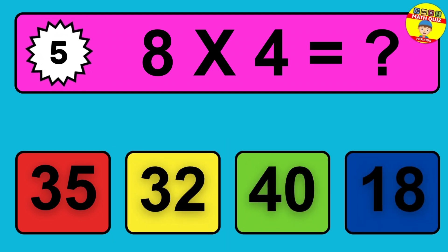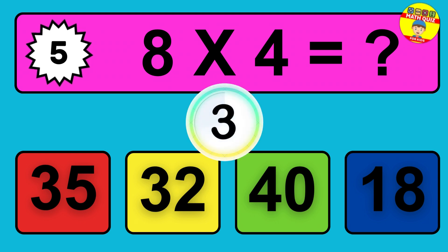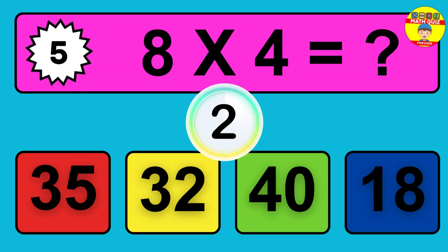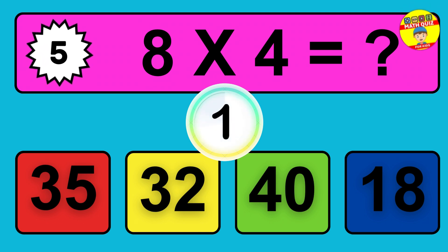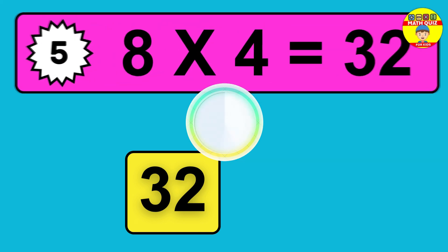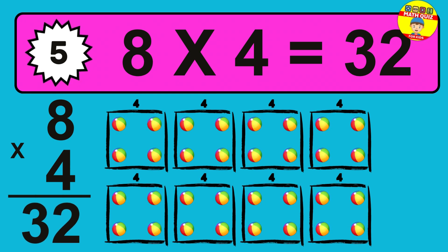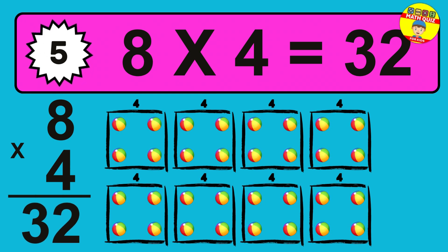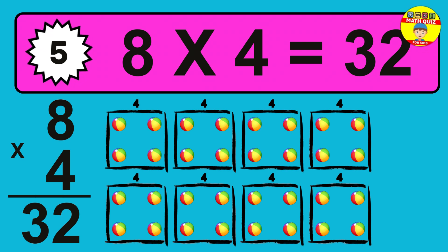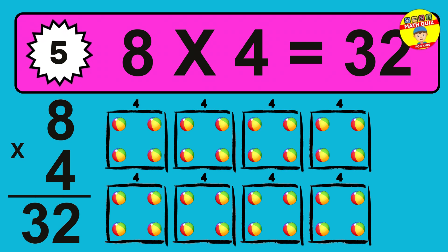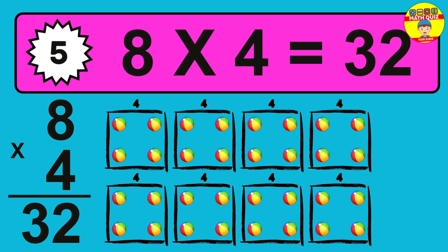Question 5. 8 times 4 equals what? So the answer is 8 times 4 is 32. To calculate, we have 8 groups with 4 balls each one. So how many balls do we have? 32 balls.